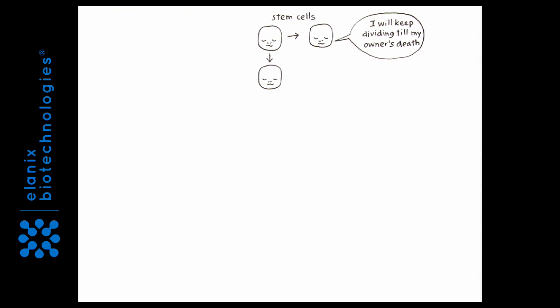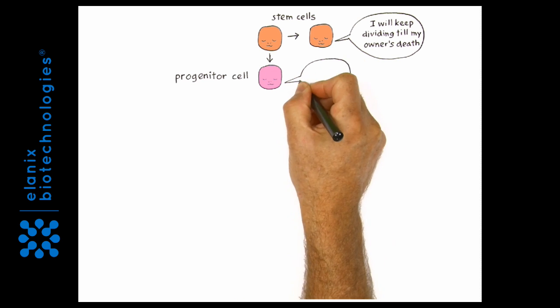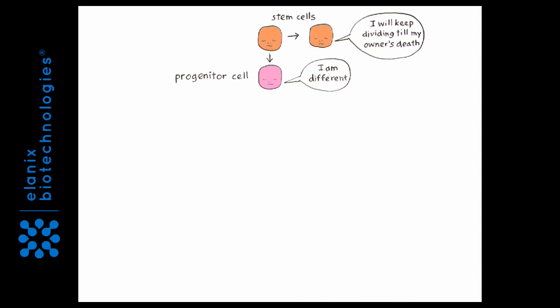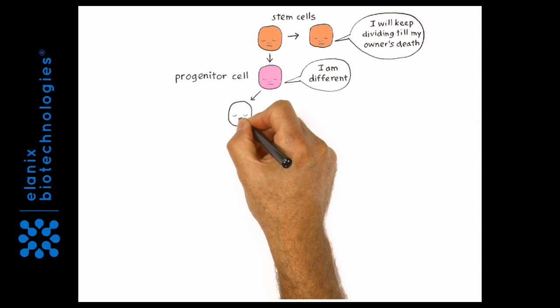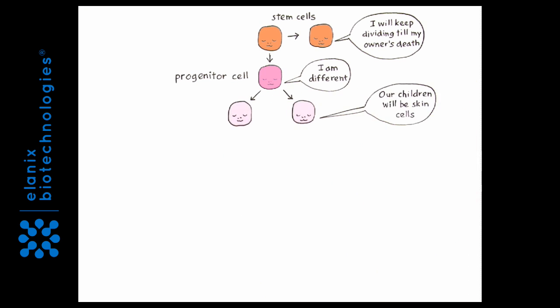But the other daughter cell differentiates into a progenitor cell. It is very different from its parent. It inactivates stem cell specific genes and activates tissue specific genes.